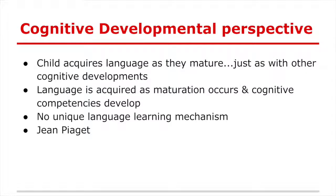The cognitive developmental perspective views language and literacy development much in the same way we view other forms of learning and cognitive development. As you mature and grow, language and your ability to acquire language also grows. Jean Piaget framed a lot of this initial thinking, saying there's no unique learning mechanism for language — you just learn the same way you develop cognitively in other areas.